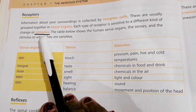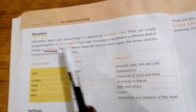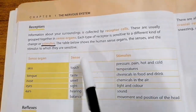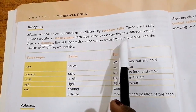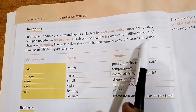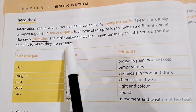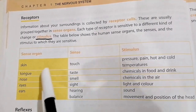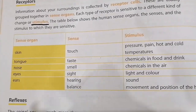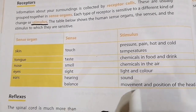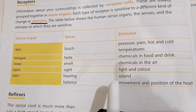The table below shows the human sense organs, the senses, and the stimulus to which they are sensitive. Let's look at the changes between the senses, the organs, and what kind of stimulation or change is happening.